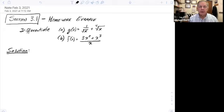So here we're supposed to differentiate two different functions. In part a, we have the function g of x equals 1 over the square root of x plus the fourth root of x.